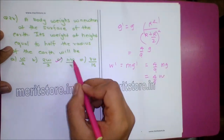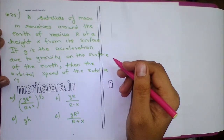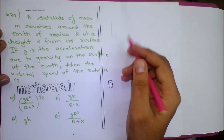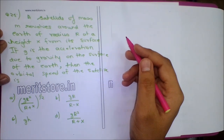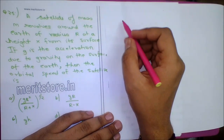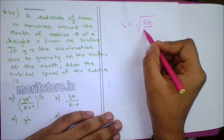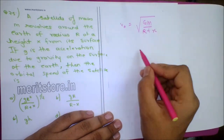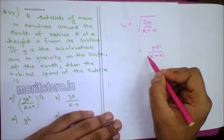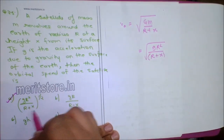Question 25: A satellite of mass m revolves around the Earth of radius R at height x from the surface. If g is the acceleration due to gravity on the surface, the orbital speed is: V0 = √(GM/(R+x)) = √(gR²/(R+x)). Option A, [gR²/(R+x)]^(1/2), is the correct answer.